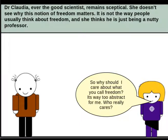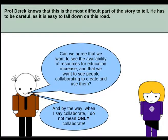Dr. Claudia, a very good scientist, remains skeptical. She doesn't see why this notion of freedom matters — it's not the way people usually think of freedom — and she thinks that he's just being a nutty professor. She says: So why should I care about what you call freedom? It's way too abstract for me. Who really cares? Professor Derek knows that this is the most difficult part of the story to tell. He has to be careful, as it is easy to fall down on this road.